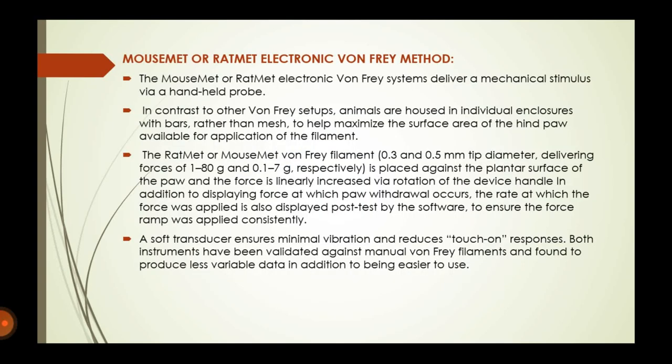The mouse mat or red mat is the only Von Frey system with a force range intended specifically for mice. Its rotary force transducer has a range of 0.1 grams to 7 grams of force. This system has been extensively validated and makes a considerable contribution to the three R's. A soft transducer ensures minimal vibration and reduces touch-on responses. Both instruments have been validated against manual Von Frey filaments and produce less variable data while being easier to use.